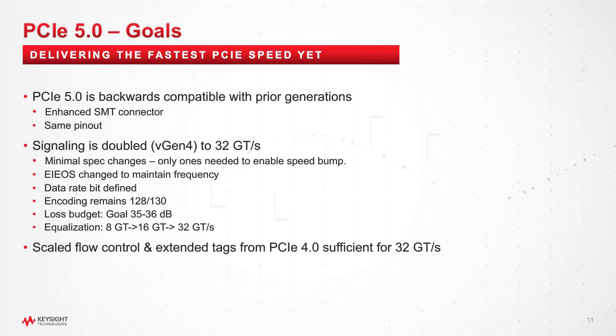One thing about PCI Express 5.0 is the timeline — the time frame that we wanted to have it completed. One way to think of PCI Express 5.0 technology is this: think of everything that is in PCI Express 4.0, and then Gen 5 really is Gen 4 with only the features necessary to get us to a speed bump of 32 gigabits per second.